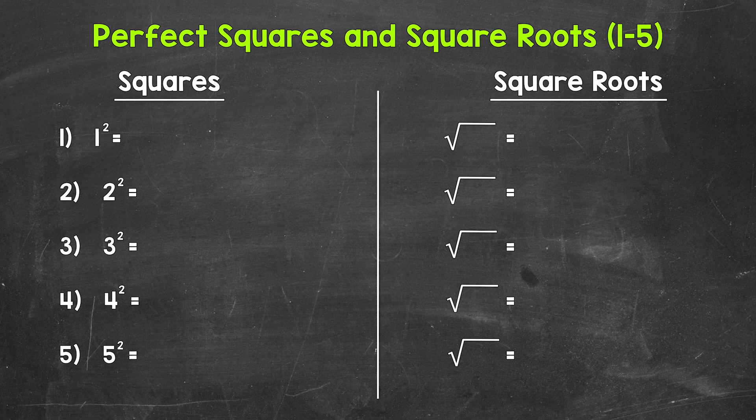Let's jump into the first five perfect squares and square roots, starting with number 1, where we have 1 squared. 1 squared means 1 times 1. 1 times 1 equals 1, so 1 squared equals 1. That means that the square root of 1 equals 1.